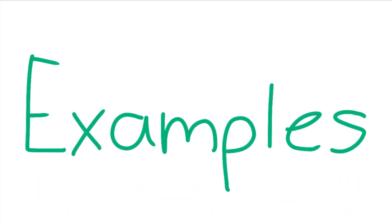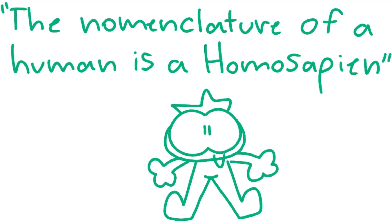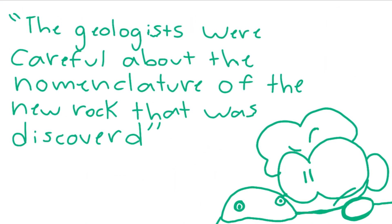Some examples of it in a sentence are: The nomenclature of a human is a homo sapien. Or, the geologists were careful about the nomenclature of the new rock that was discovered.